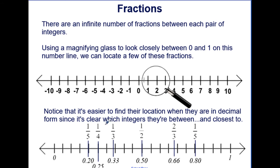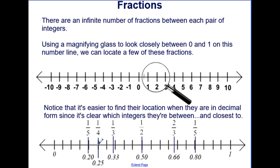It's easier to see the location, right? We have our location here. Above, they're written as ratios, and then below as decimals. I think it's a little easier to see them when they're in decimal form because it's more clear which integers they're between and closest to. It's a lot easier to see 1.33 rather than 1 over 3.